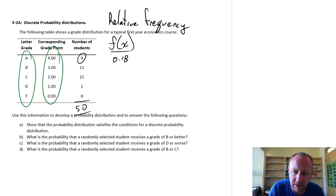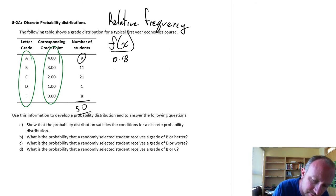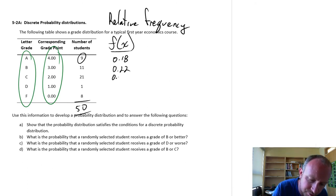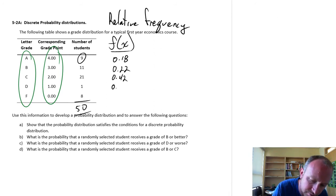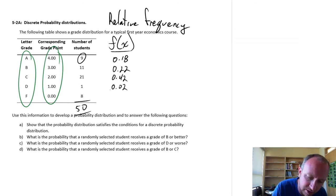So there's an 18% chance, or a probability of 0.18, that a randomly selected student will receive an A in that course. Now moving on to the rest of these, for the B, I have 11 out of 50 students, so that's 0.22. For the C, I have 21 out of 50 students, 0.42. What's the probability of a D? This is 1 out of 50, so 0.02. And finally, for the F students, 8 out of 50 is 0.16.